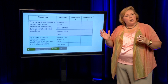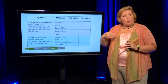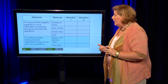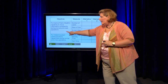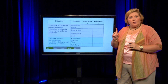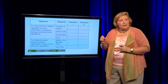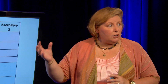I want to show you what a consequence table looks like in two phases. Remember what I spoke about earlier regarding measures — how important it is to know your measures so you'll know if you're actually meeting your objectives. The objectives this group came up with were: number of users, ease of use, screen size, and cost. These four feed into the capability to move information during normal and crisis situations. To initiate and sustain communications, the two key measures were battery life — both standby time and talk time — because if communication systems go down, they won't be of help.